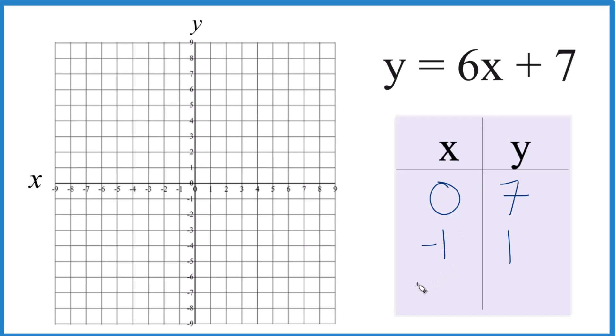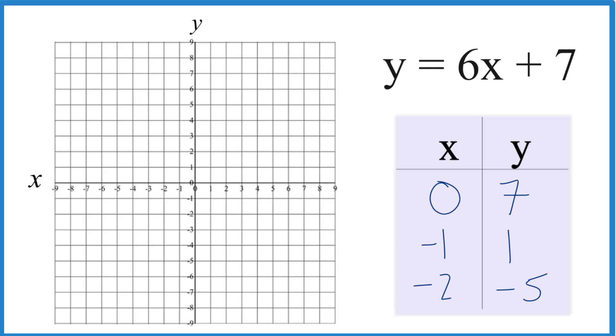How about negative 2? Negative 2. 6 times negative 2 is negative 12, plus 7, that gives me negative 5. So these are the points we're going to plot for the line y equals 6x plus 7.